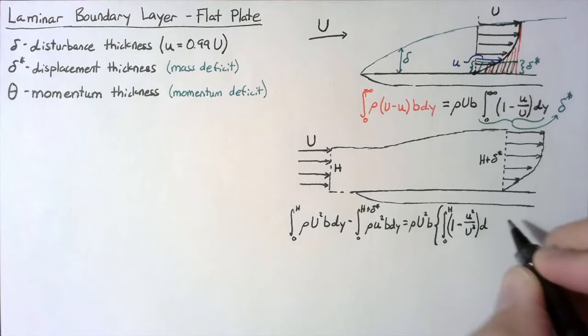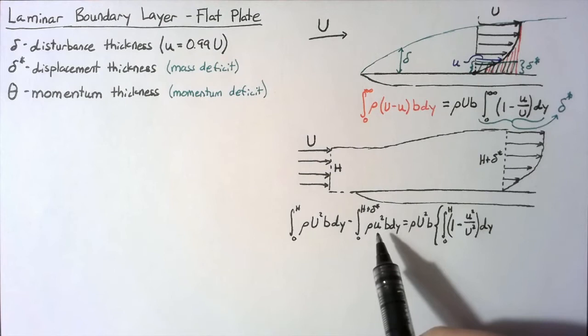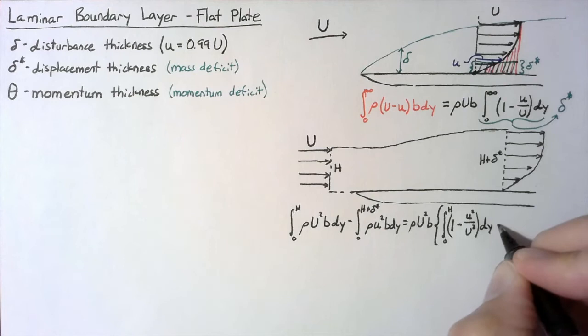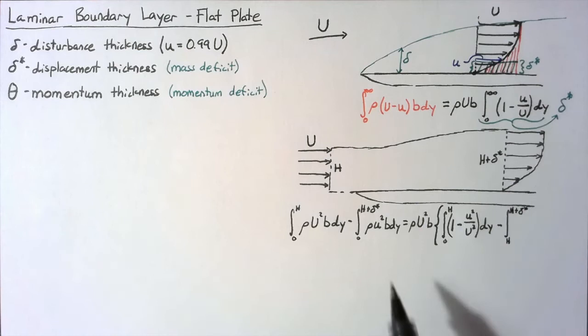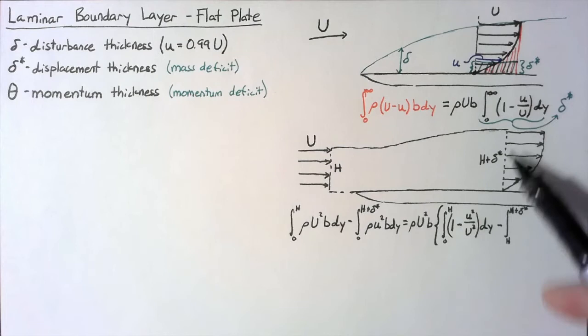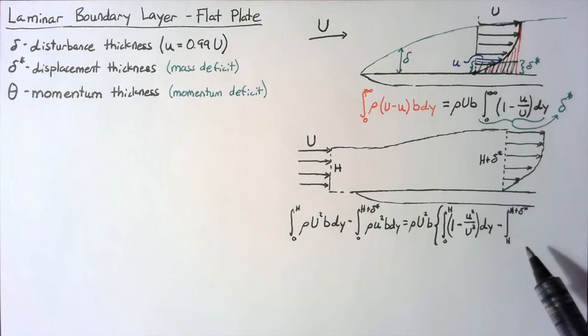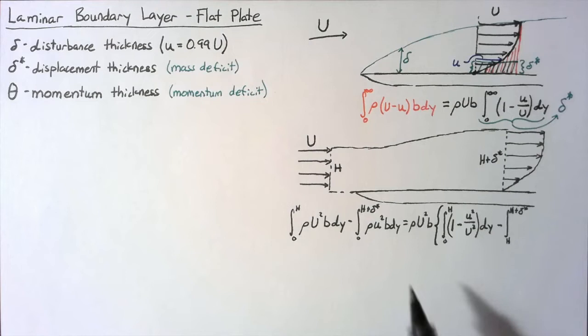All of that's going to be multiplied by dy. We still have a piece of this integral from h to h plus delta star. So we need to subtract off that integral divided by rho U² b. If we choose h so that it is sufficiently above delta, the disturbance thickness, then we can say there's no disturbance in this part of our integral, which means lowercase u is going to be the same as uppercase U. So we actually just end up with 1 again for this piece of our integral.